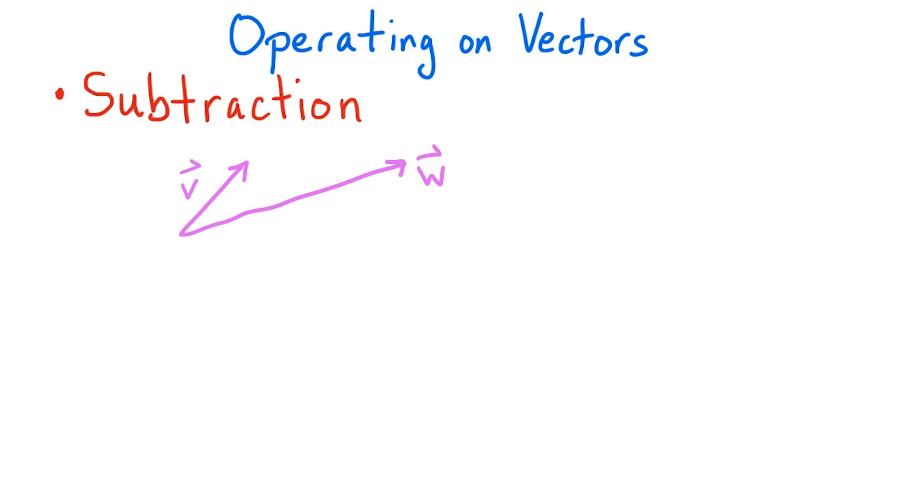We can subtract vectors in addition to adding them. Here is the geometric interpretation of vector subtraction. Consider the vectors v and w, both emanating from the same point.